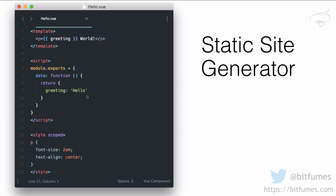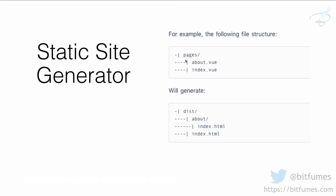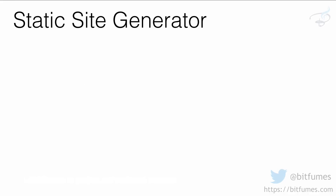Coming back to static site - whenever you create a static site you create a pre-rendered application, then all these things are combined and transformed into an HTML file. Here you have a pages directory in your Nuxt application, and whatever you define inside the pages folder will become the route. When you create a static site it will generate an index.html for that page, because your server doesn't know how to render your Vue app, but the browser knows how to render an HTML file.